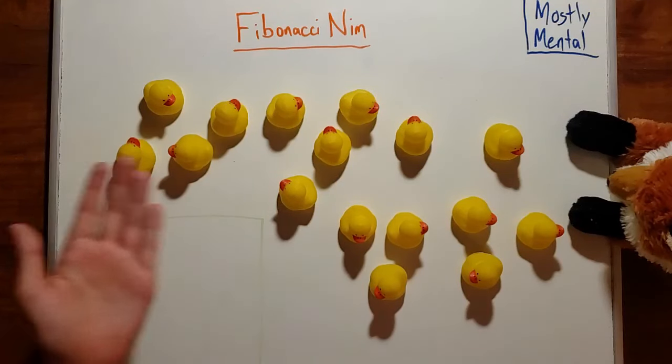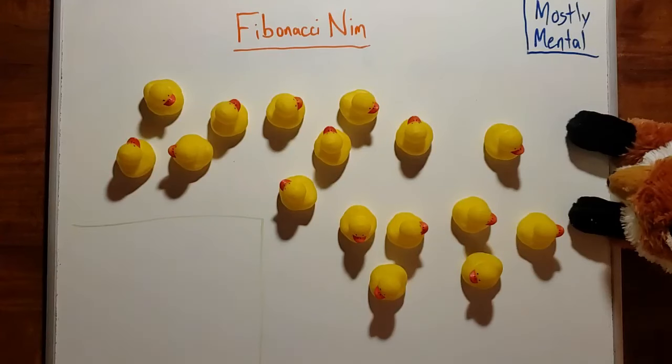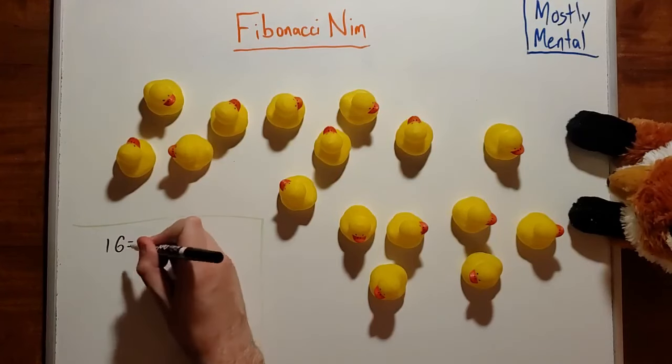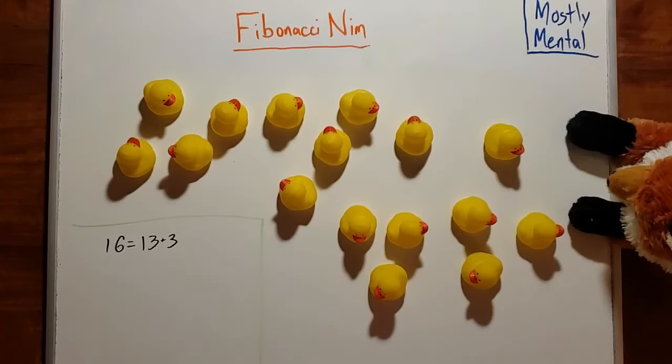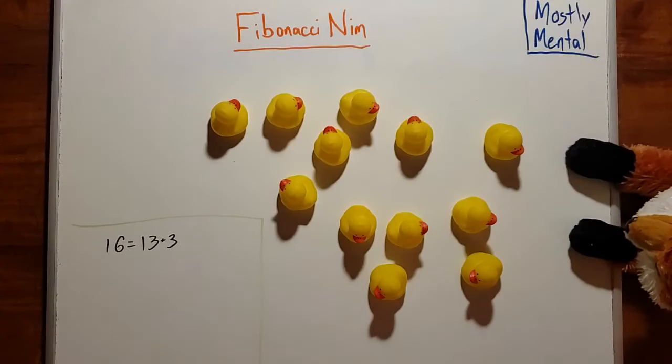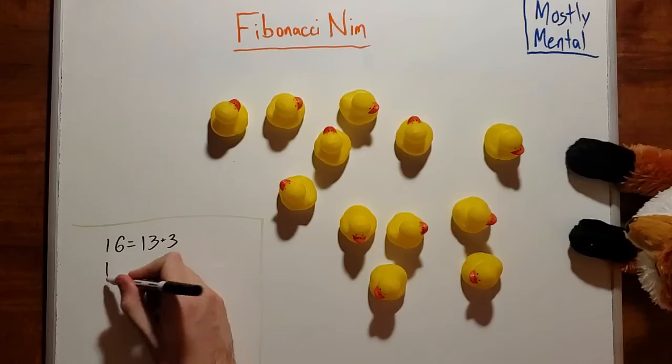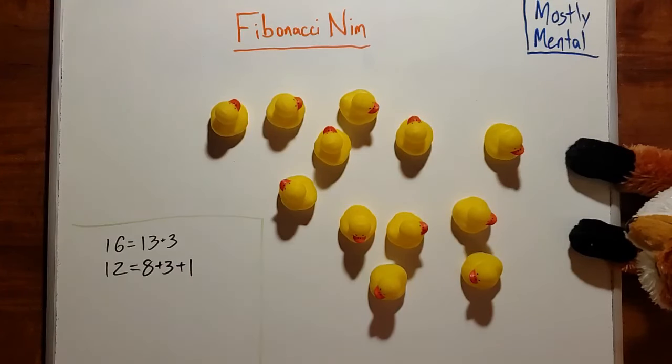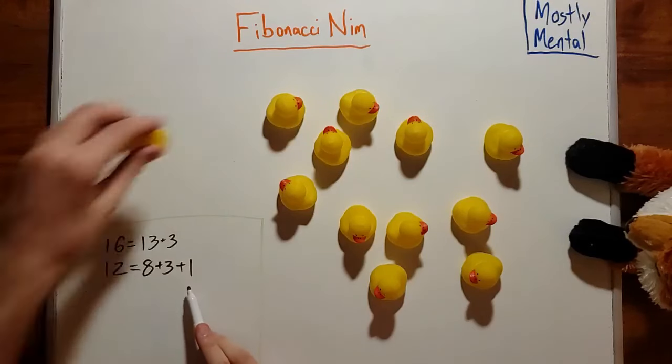Once again, we have 16 ducks, but this time I know what to do with them. The Zeckendorf representation for 16 is 13 plus 3, and the smallest term is 3, so I should remove 3 ducks. Now Aurora can take 1, leaving me with 12. And 12 is 8 plus 3 plus 1, so I should remove 1.